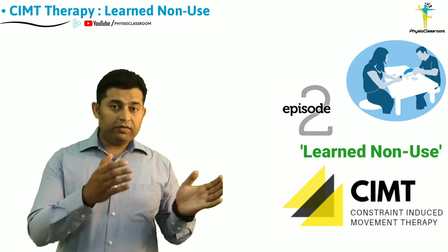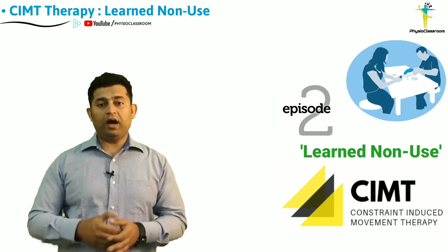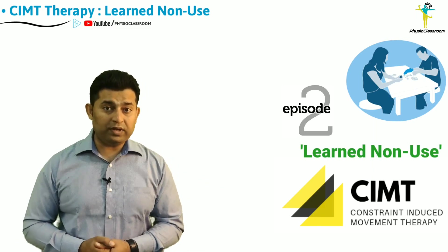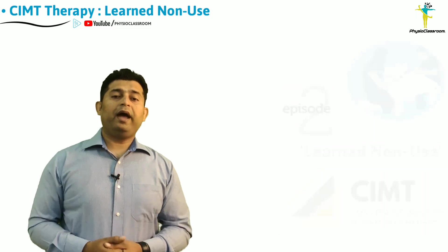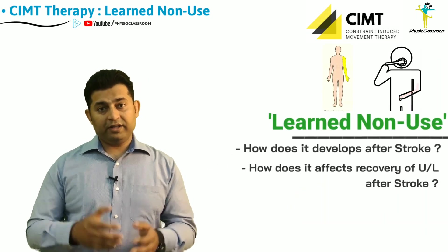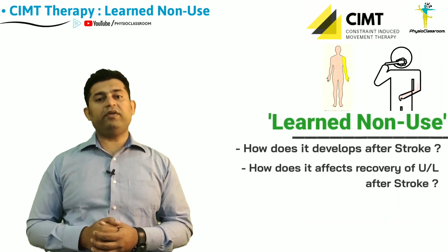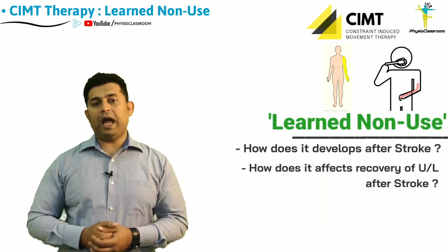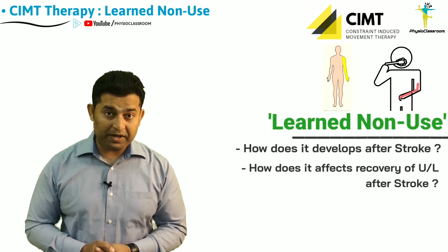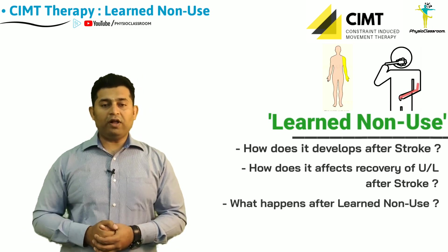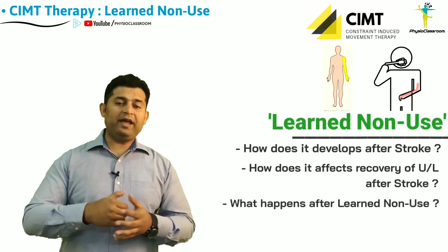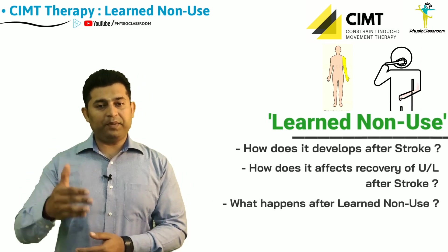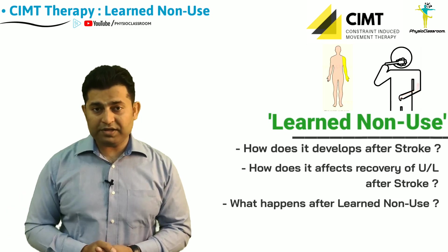We will also cover how learned non-use can actually delay and affect the functional recovery of the weaker arm in a hemiplegic patient. Finally, we will also be explaining what actually happens in the brain of the patient when learned non-use is developed.